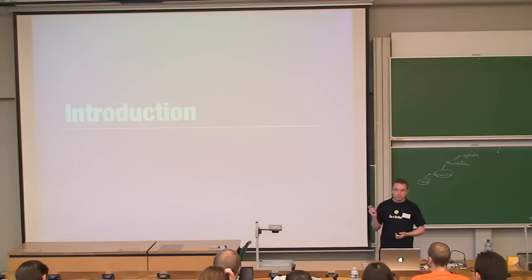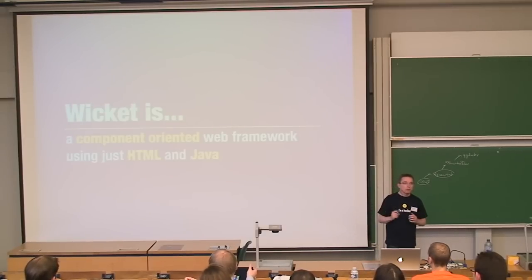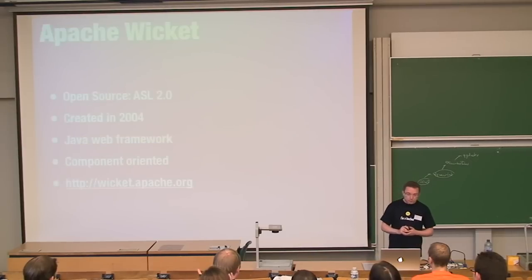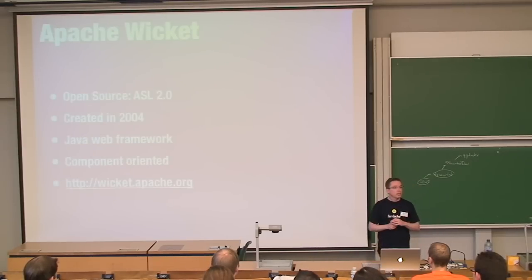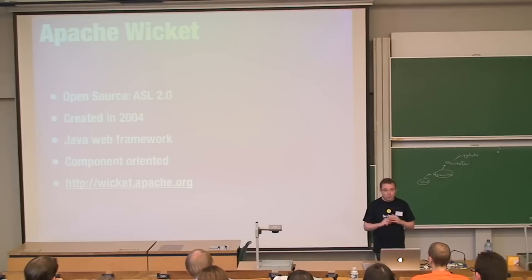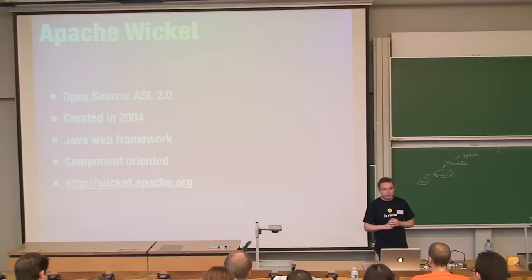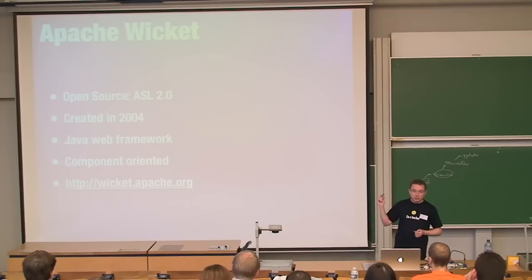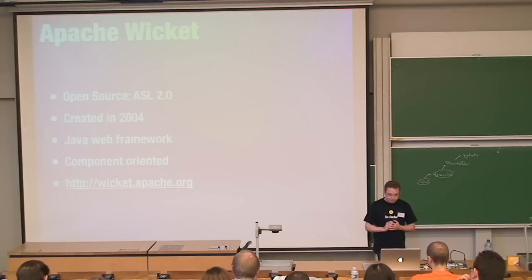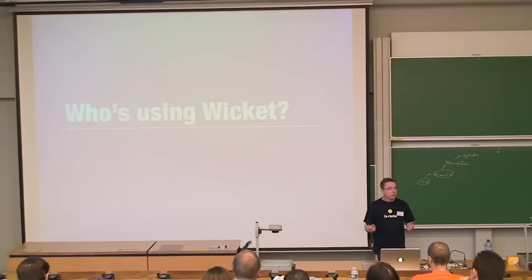What is Apache Wicket? It's a component-oriented web framework using just Java and HTML. It's open source — Apache licensed — so anybody can do with it whatever they want. It was created in 2004. It's a Java web framework, it's component-oriented, and you can find it at the URL shown. So who's using Wicket?